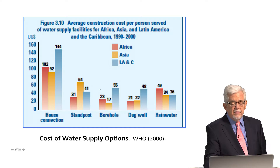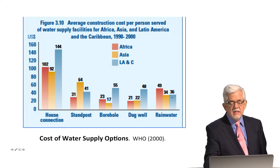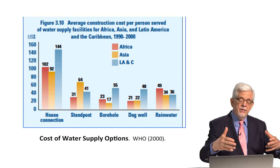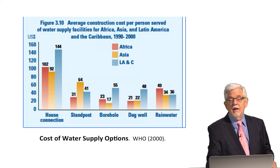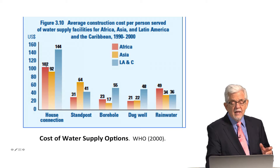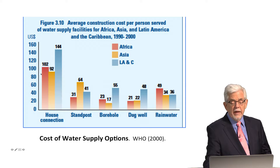Looking at costs in different parts of the world for household connection, standpipe, borehole, dug well, and rainwater: taking Africa as an example, the cheapest options are boreholes, dug wells, or standposts. Rainwater harvesting is a little more expensive — you need a roof that collects water, draining into a pipe and a large container. A household connection is at least double the cost of rainwater collection, which is why we don't have household connections everywhere. A hundred to one hundred fifty dollars per household is a lot in many parts of the world.